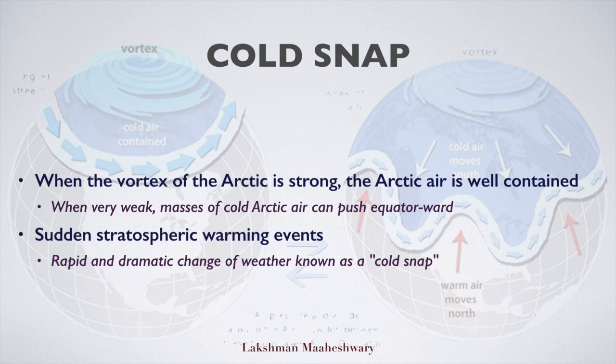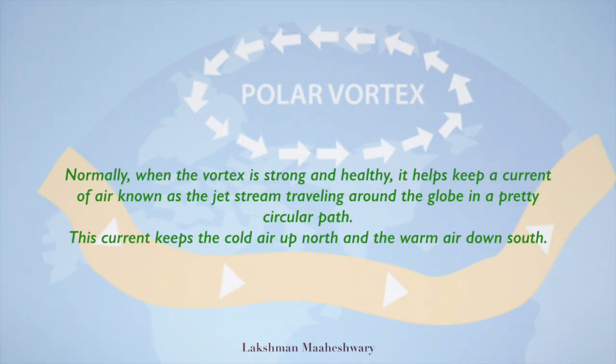What happens next is called sudden stratospheric warming events. It brings cold dry air into contact with the warm moist air of the mid-latitudes, causing rapid and dramatic changes in weather known as cold snaps. Normally, when the vortex is strong and healthy, it keeps a current of air known as the jet stream traveling around the globe in a pretty circular path, which keeps the cold air up north and the warm air down south.